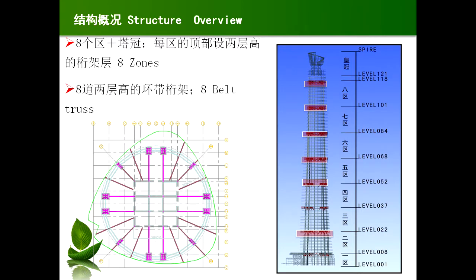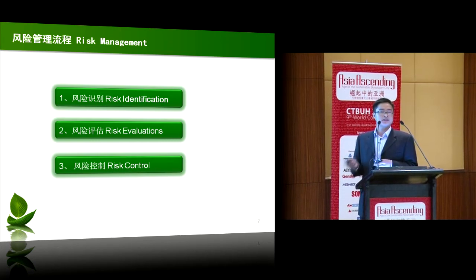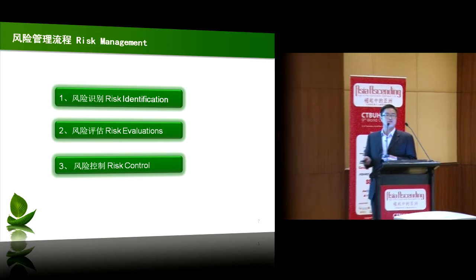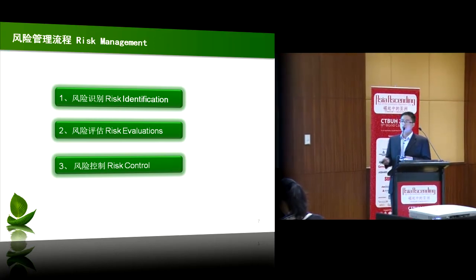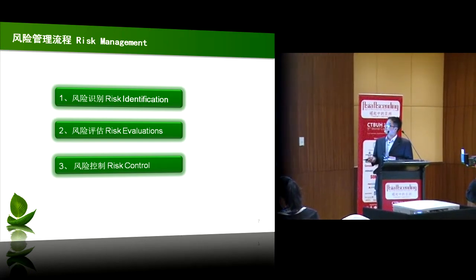This is an overview of Shanghai Center. The Shanghai Center has eight zones, and on top of each zone it has a truss layer. From the perspective of risk control and management, the first step is to identify the risks of the project — for this building, how we can identify and control those risks is a very important topic.